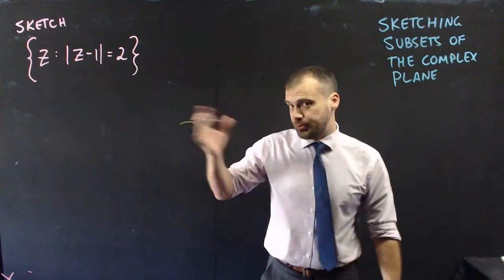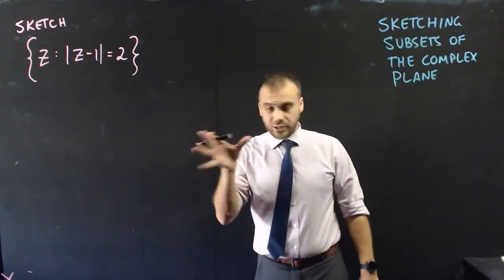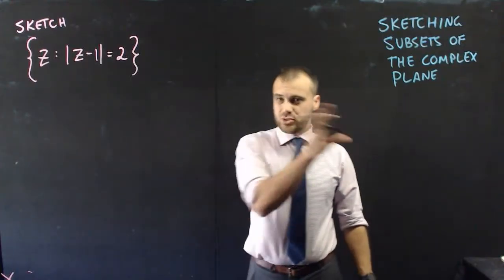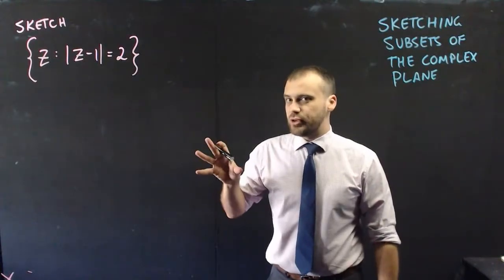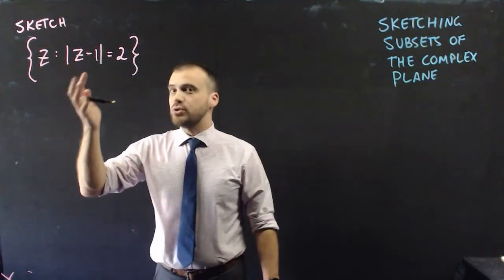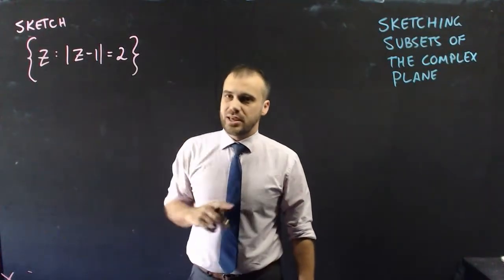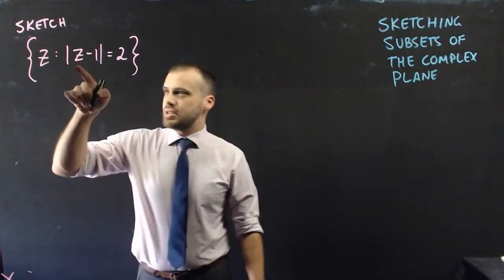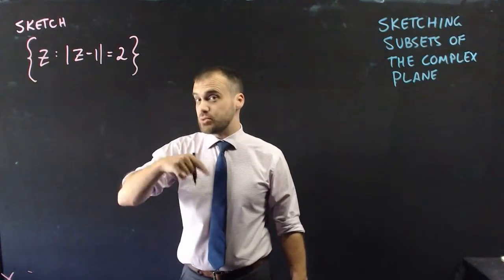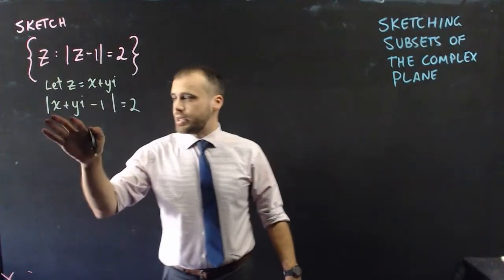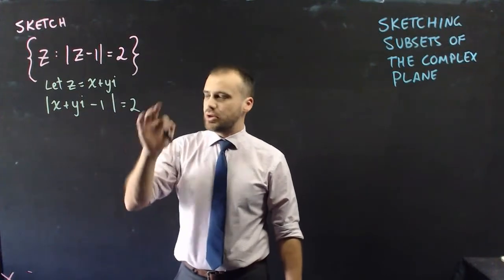Now the questions get more complicated. Here's a harder one, and there are two ways to tackle it — algebraically or geometrically. The condition is: the set of all z such that |z − 1| = 2. Since z is a complex number, we can write it as x + yi, giving us |x + yi − 1| = 2.